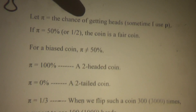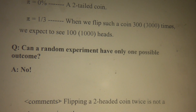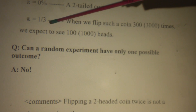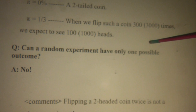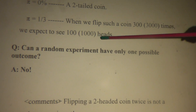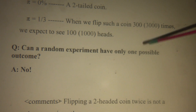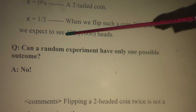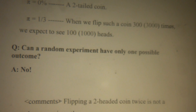Next, consider a real coin where π equals 1/3, meaning a 33.3% chance of getting a head. When we flip such a coin 300 times, we expect to see 100 heads; if we flip it 3,000 times, we expect to see 1,000 heads. The key word here is 'expect' — you may not see exactly 100 heads when you flip 300 times. Even if you see 98 or 99, you can still identify it as that coin.